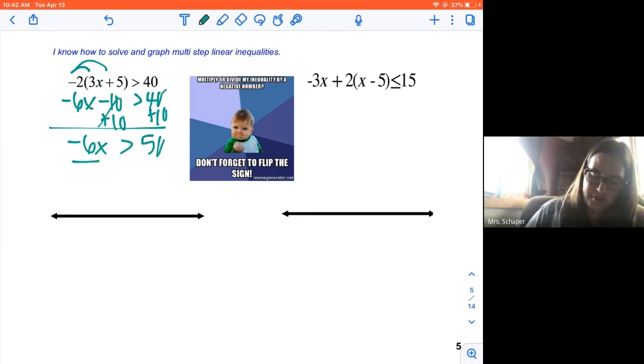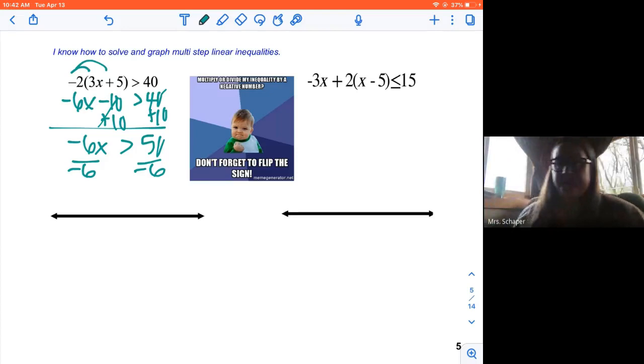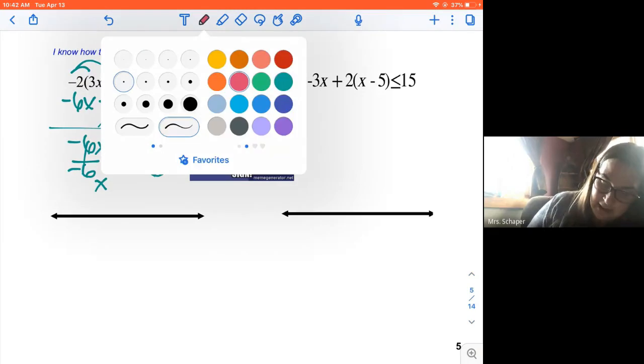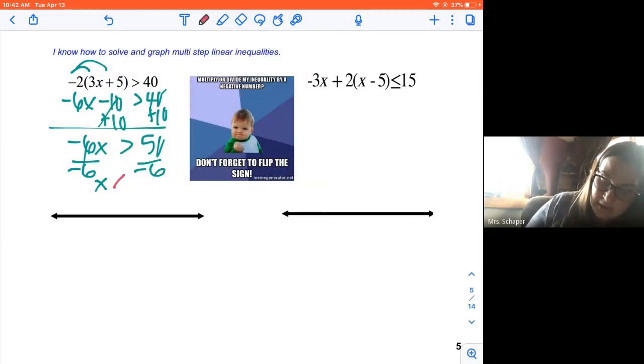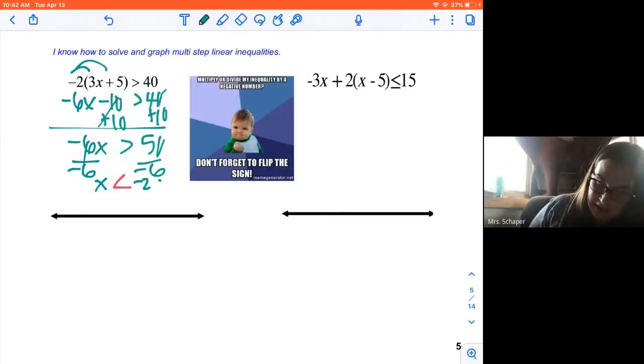I'm going to divide both sides by negative 6. So then what happens when we multiply or divide by negative numbers? We need to flip the sign. So we've got that x is, I'm flipping the sign, less than, and then 50 divided by 6 is negative 25 thirds.